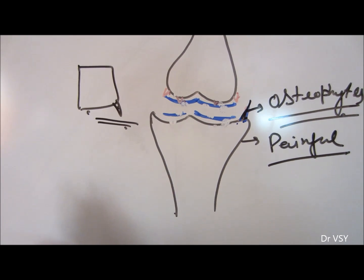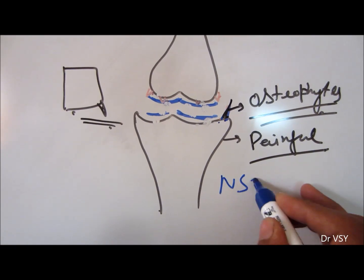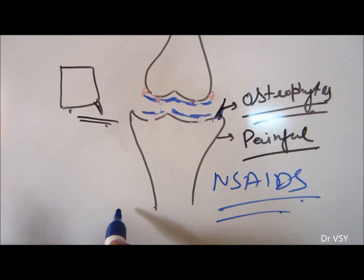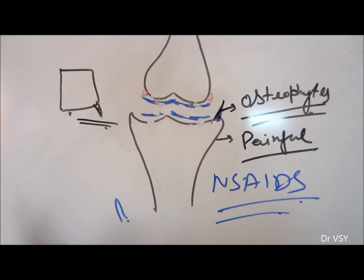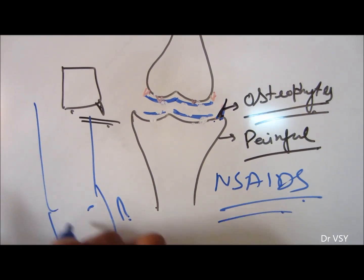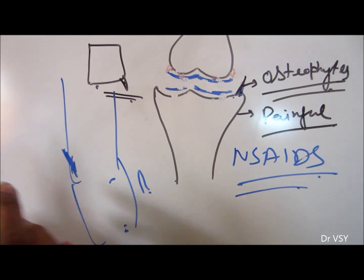There is no, as it is, treatment required earlier, and later on you can't do anything except giving the NSAIDs. Here we are going to show you an osteophyte growing near the elbow joint, and the patient was complaining of pain on the lateral aspect of the elbow joint here.